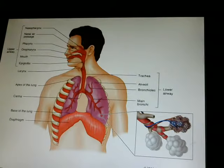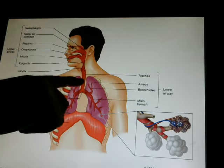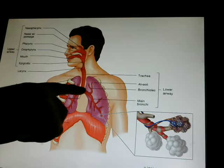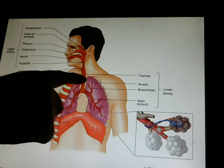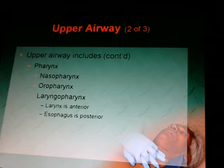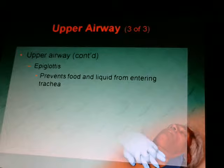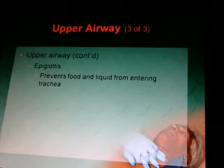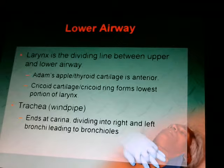You have your nasal pharynx, your larynx right here going into your trachea, and your esophagus is back here. The upper airway also includes your epiglottis, which prevents food and liquid from entering the trachea. Your larynx is the dividing line between the upper and the lower airways.